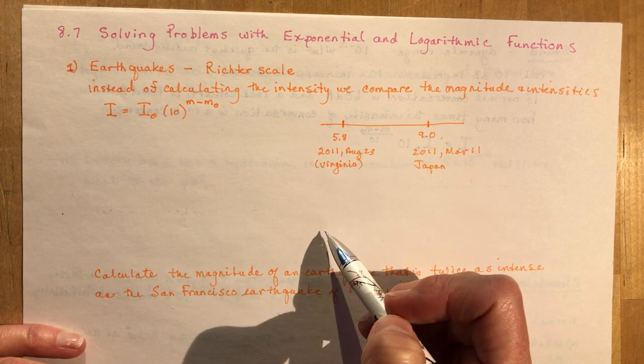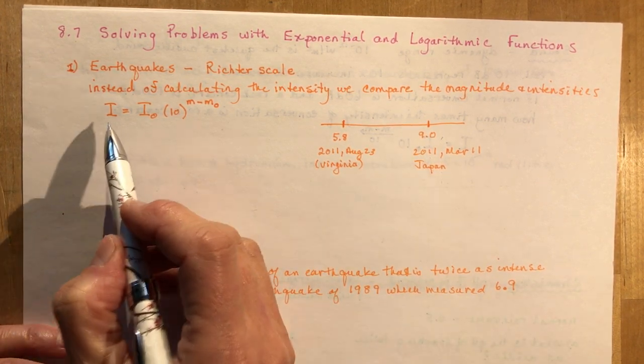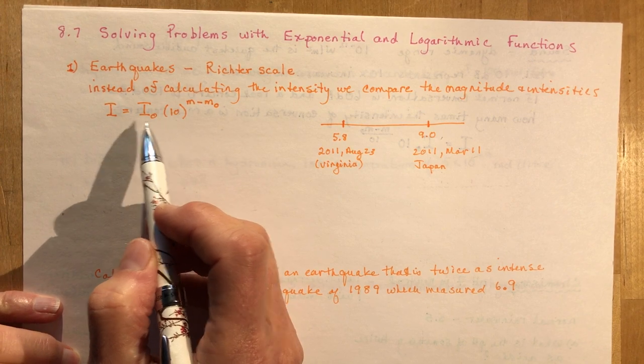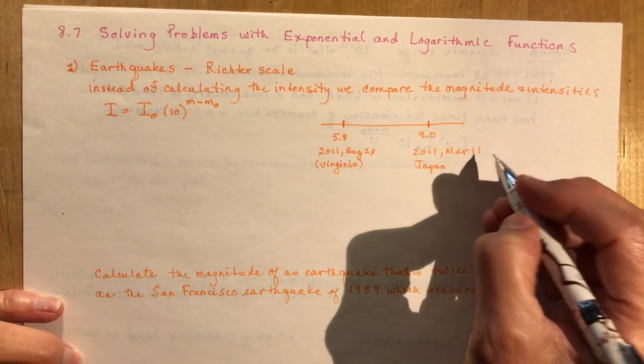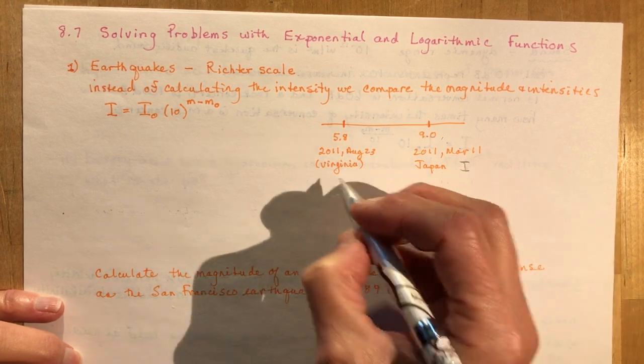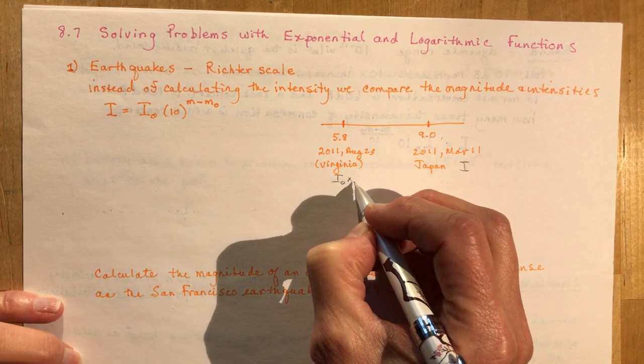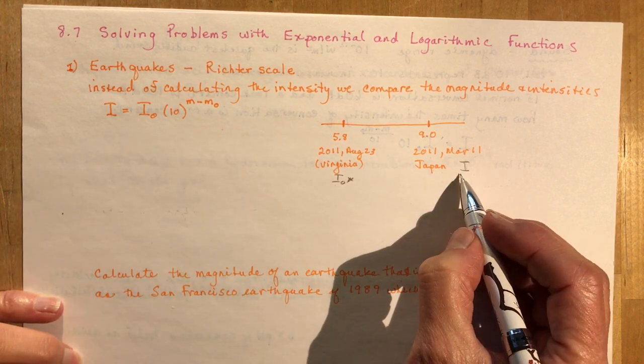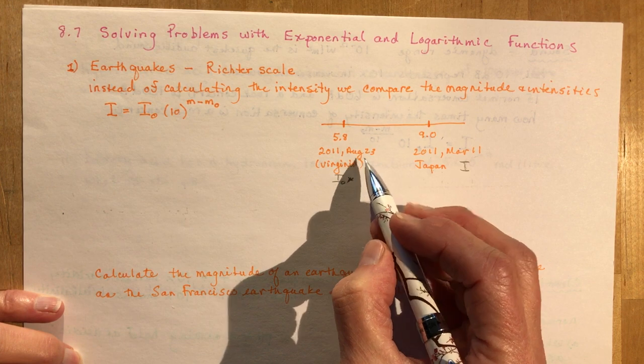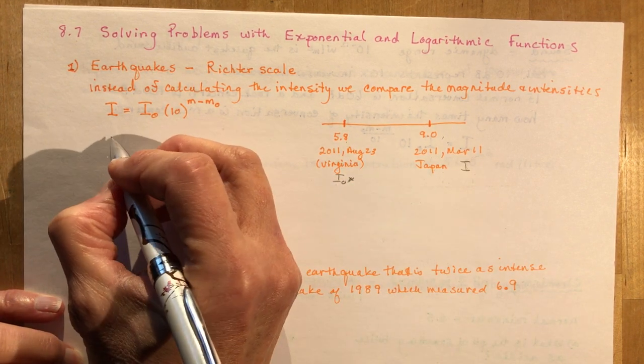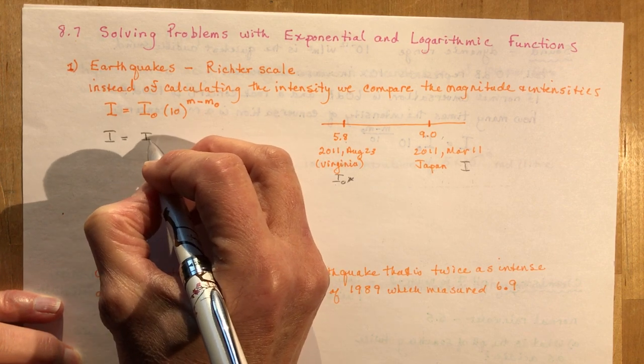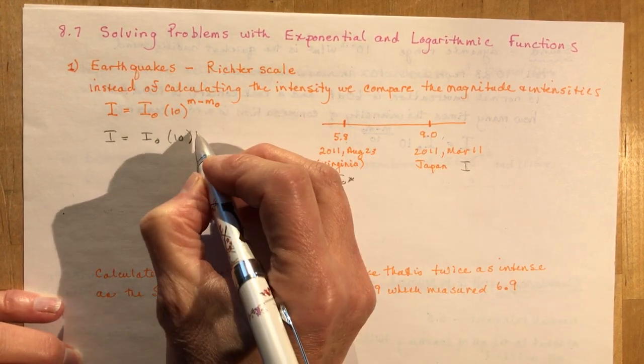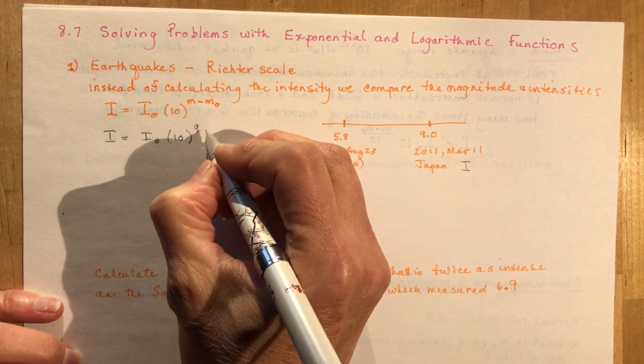So let's compare the intensities of these two earthquakes. I want to pick which one is stronger. The Japan one is stronger, so I'm going to give that one the I label. We're going to say let I be the earthquake of magnitude 9 and I sub 0 the earthquake of 5.8. The intensity is really easy calculation because all you have to do is plug in the magnitudes here. The magnitude of Japan was 9 and the magnitude in Virginia was 5.8.